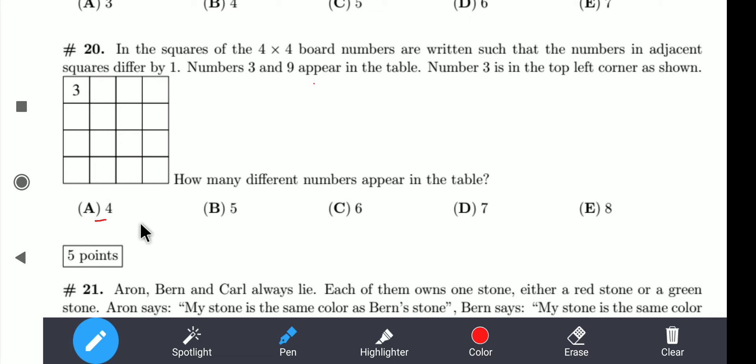So let's begin. What the question means is that the numbers in adjacent squares will differ by 1. So that means if we are writing 3 here, we can write 4 or we can write here 2. But the maximum it can go up to is 9. So I also need a 9 here. So let's begin.